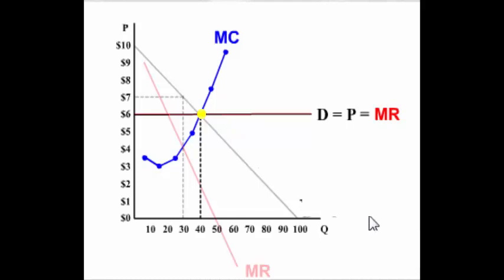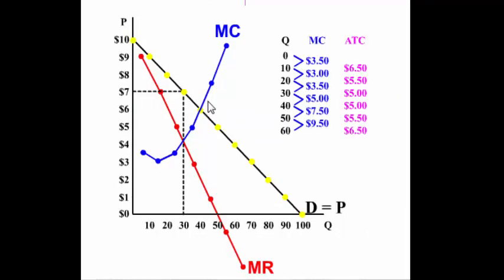The monopoly is allocatively inefficient whether it's earning a profit, breaking even, or making a loss. Remember: if you have the marginal cost, marginal revenue, and demand curves on the graph, you can identify where allocative efficiency takes place and confirm that this monopoly is allocatively inefficient.